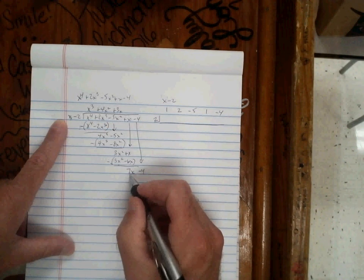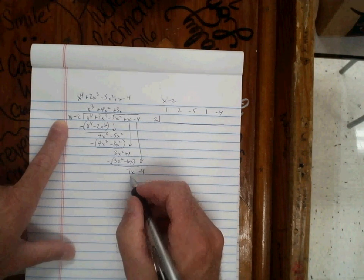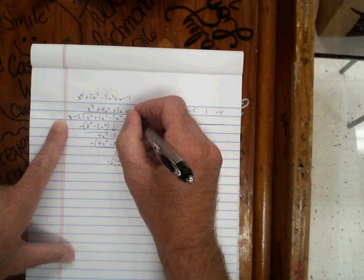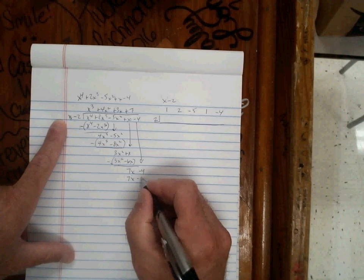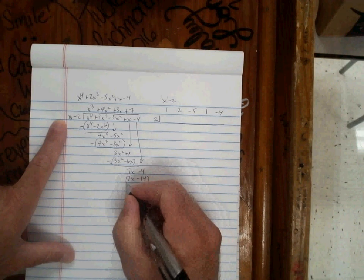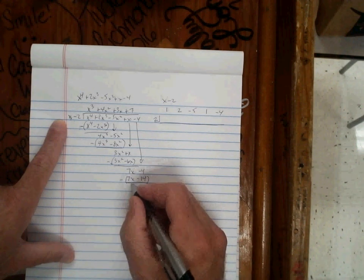What do I multiply by x to make 7x? Plus 7 goes up top. 7 times x makes 7x. 7 times negative 2 makes minus 14. I subtract that. 7x is canceled.